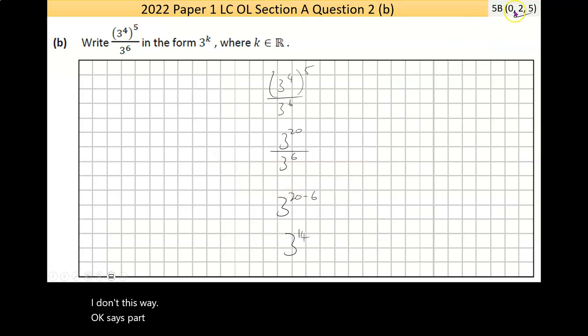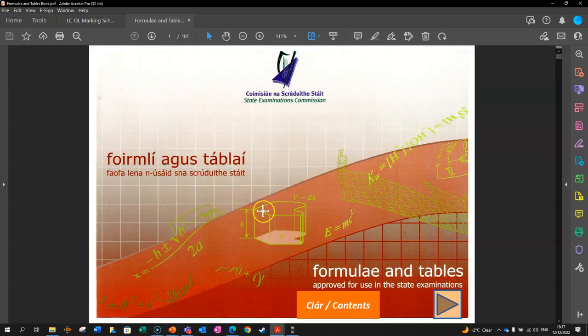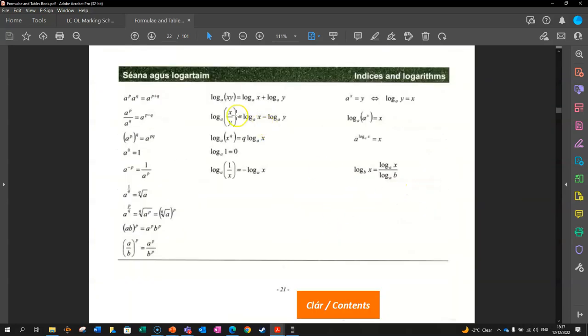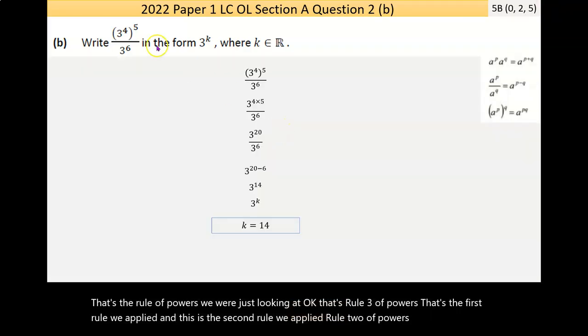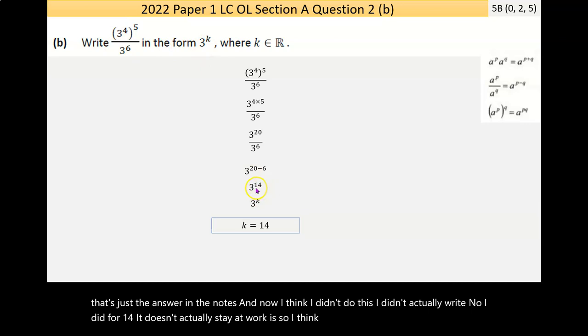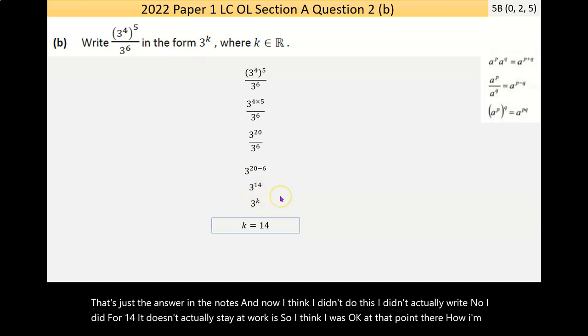So that's part B. Not worth a huge amount of marks, but it's just testing your rules of powers. And it's worth noting that in the maths tables, in terms of the contents, if I look for indices and logarithms, that's the rule of powers we were just looking at. That's rule 3 of powers. That's the first rule we applied. And this is the second rule we applied, rule 2 of powers. So, moving on. That's just the answer in the notes. And now, I didn't actually write. No, I did. 3 to the power of 14. It doesn't actually state what K is. So, I think I was okay at that point there. No harm in spelling it out to the assessor.